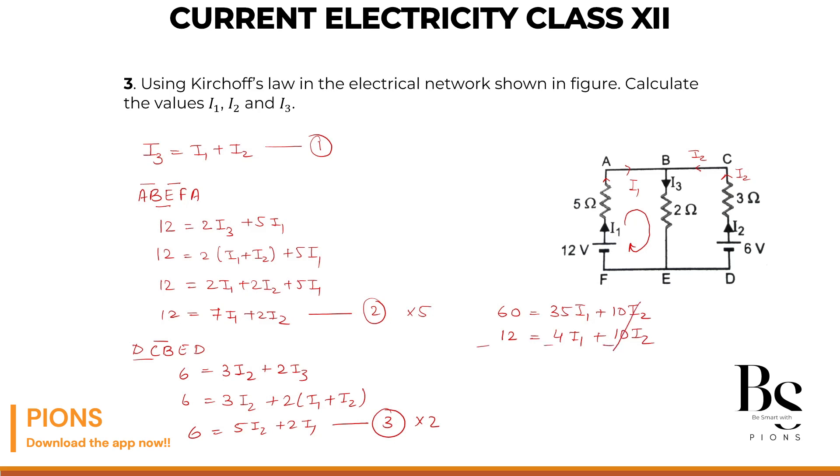Let's subtract both. This cancels out, and we're left with 10 minus 2 is 8, 5 minus 1 is 4. 35 minus 4, 31I1. Current I1 is 48 upon 31. This is our current I1.